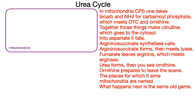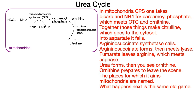In mitochondria, CPS1 takes bicarb and NH4 for carbamyl phosphate, which meets OTC and ornithine. Together those things make citrulline, which goes to the cytosol — into aspartate it falls.